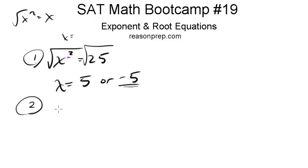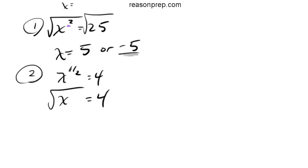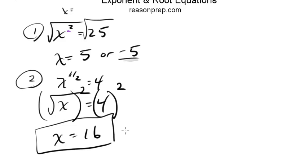Let's look at number 2. How about something like x to the 1 half equals 4? Or you could see this written as square root of x equals 4. They're the same thing. So let's work with this radical one. We have a square root. We want to get x by itself. What is the opposite operation of a square root? It's a square. So let's square this. But if we square this, we've got to square this side too. So this is just going to be x equals 16. And there you go.